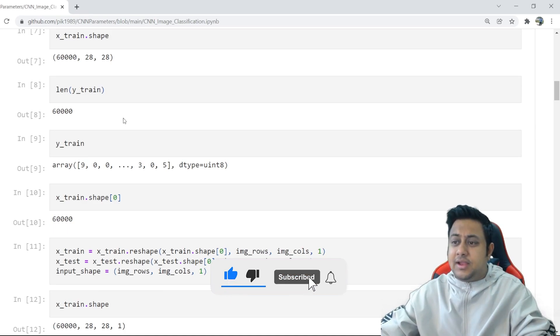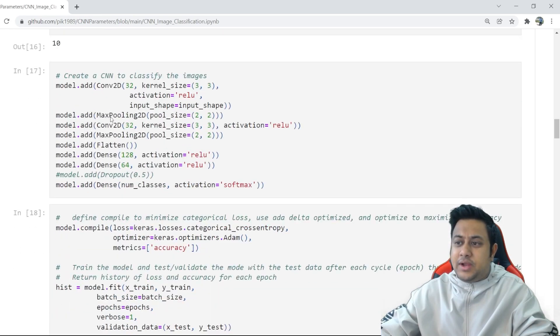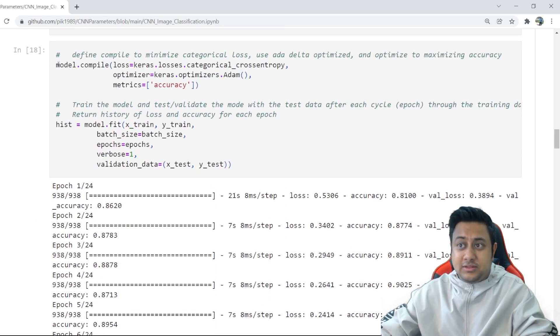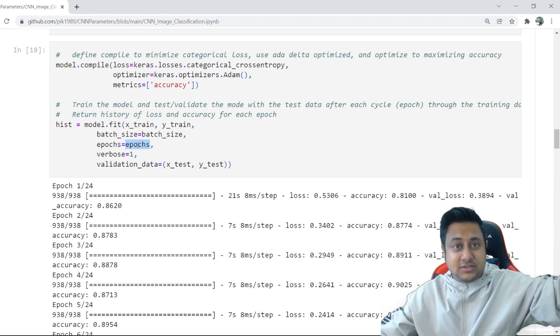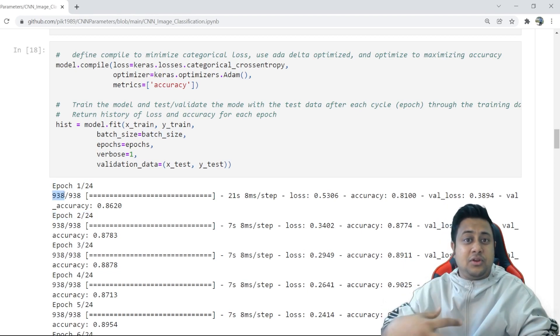As we move ahead in the program, you can see when I'm running this code - here I have defined epoch equals to epochs. Now epochs is nothing but my variable that I have defined. So my epochs is 24 and my batch size is 64, and my total training data size is 60,000. That is the reason you can see epoch 1 by 24, 2 by 24, and 938 is nothing but the number of iterations.